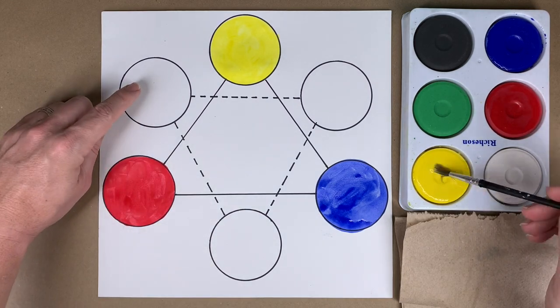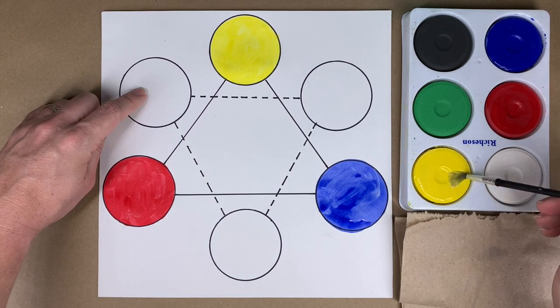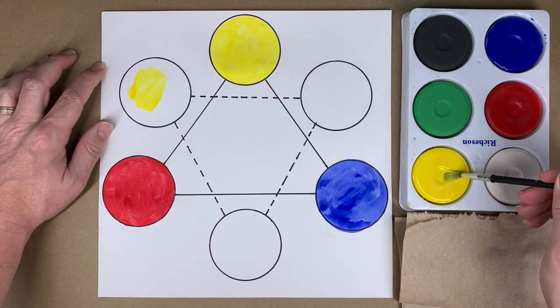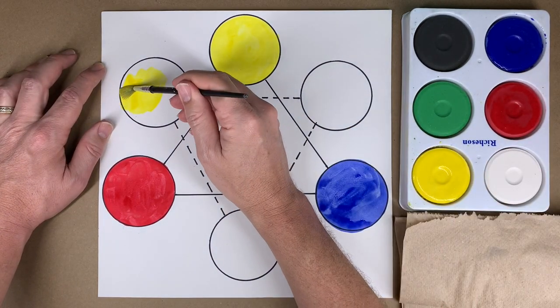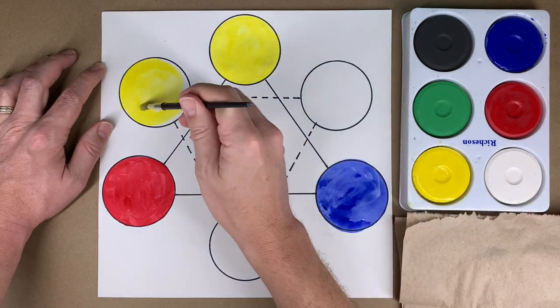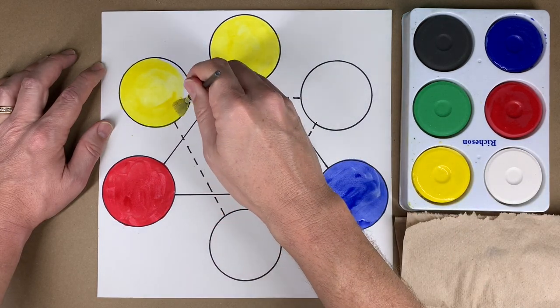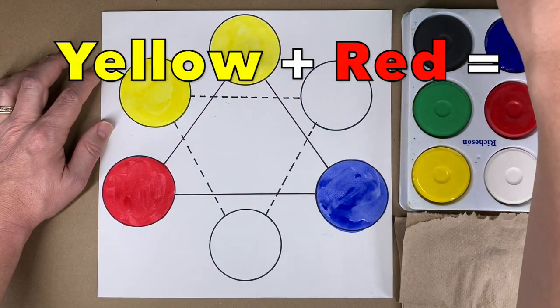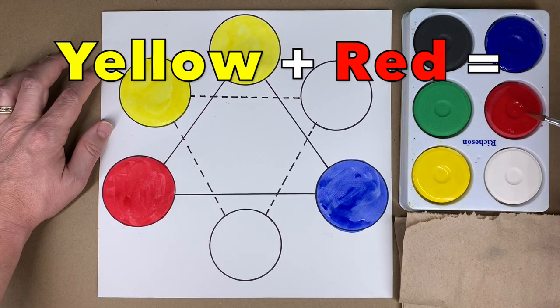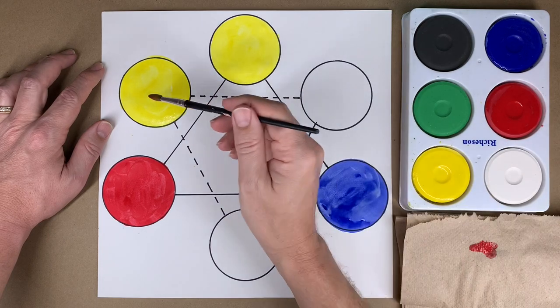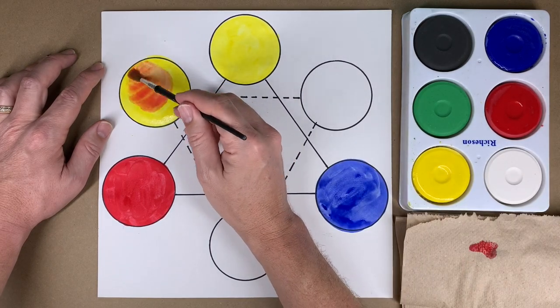First I will need yellow. I'm going to put some yellow here and I'm going to paint the whole circle yellow first. Clean your brush. I'm going to get some red paint, not too much red. I'm going to put some red paint and mix it right together like that.